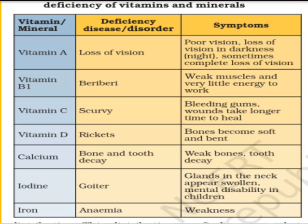Looking at the chart, many deficiency diseases are caused by reduced vitamins and minerals. Vitamin A deficiency causes poor eyesight and night blindness — people cannot see in the dark. Vitamin B deficiency causes beriberi, in which muscles become weak and a person lacks energy for work.